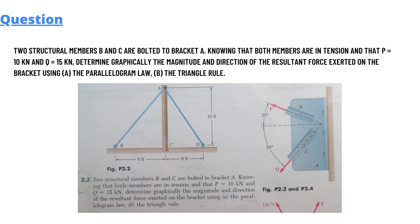There are two structure members B and C bolted to a bracket A. The diagram is given below. Knowing that both members are in tension and that P equals 10kN and Q equals 15kN, determine graphically the magnitude and direction of the resultant force exerted on the bracket using the parallelogram law and the triangle law.